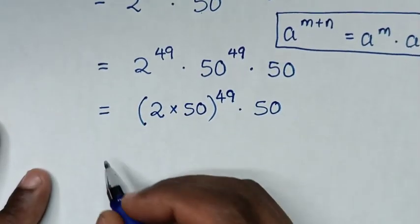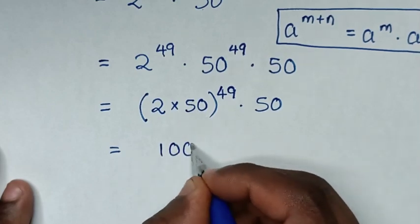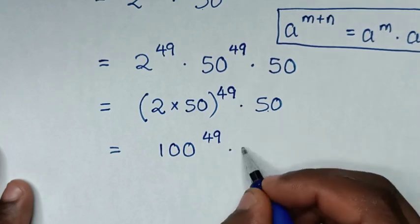Then it will be equal to, 2 times 50 is 100 then power of 49 then times 50.